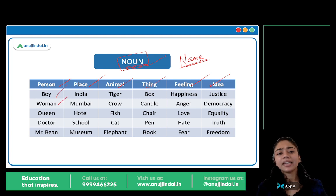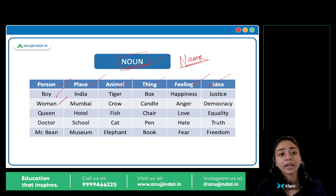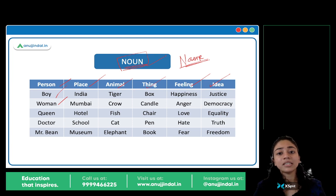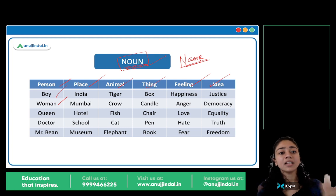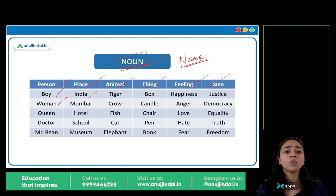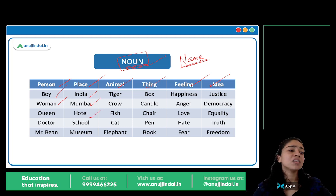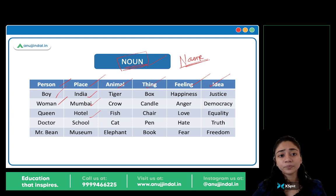Boy, woman, queen, king, doctor, teacher, Mr. Bean — sab naam hai. Even Maggi noodles, Yippee, Kit Kat, Cadbury — sare naam hai, toh nouns hai. Place: India, Mumbai, Delhi, hotel, school, museum, France, Germany, Paris, Eiffel Tower — sab places ke naam hai. Noun hai.